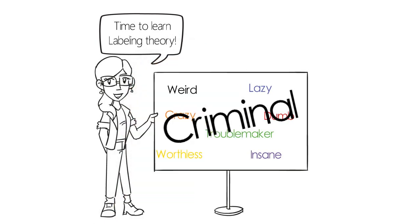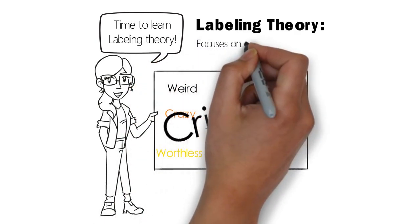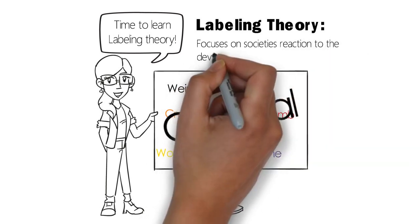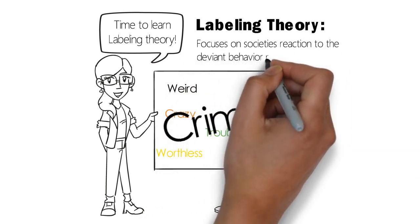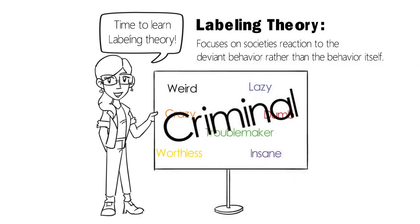Stemming from symbolic interactionism, labeling theory focuses not on the deviant or criminal behavior itself, but on society's reaction to the deviant behavior. How we respond to the behavior determines whether something or someone is deviant.